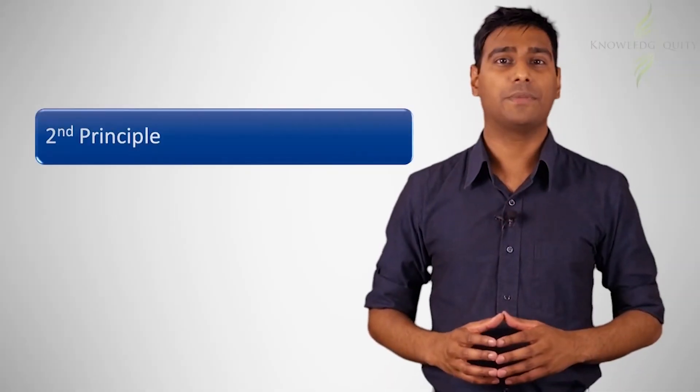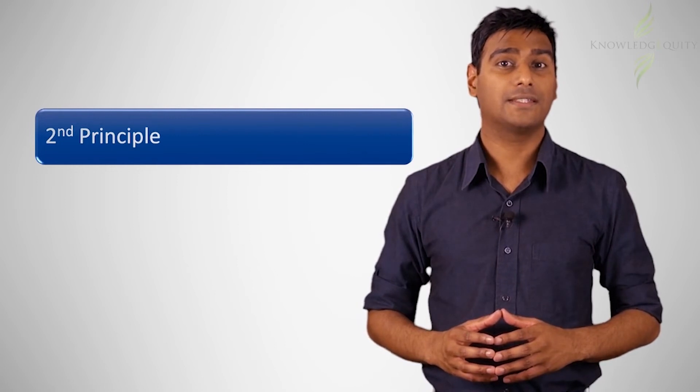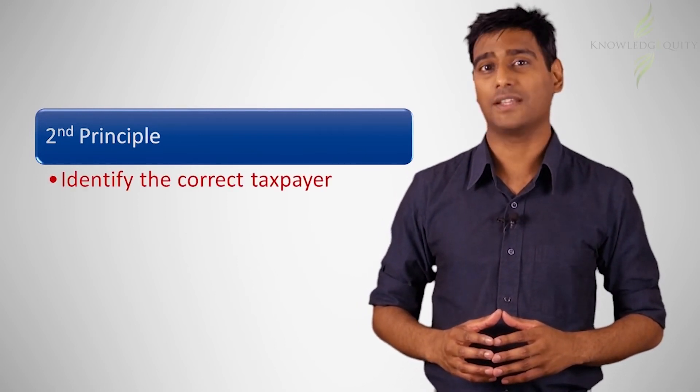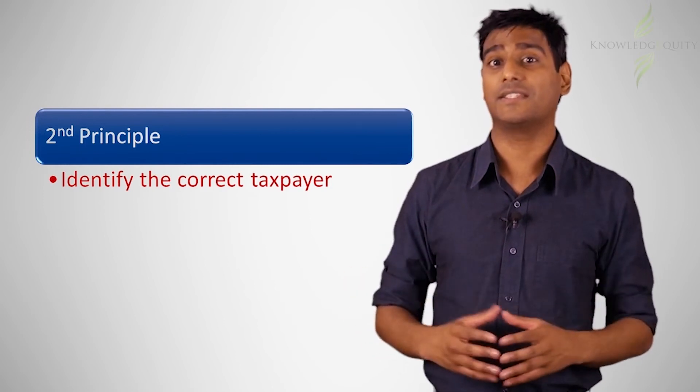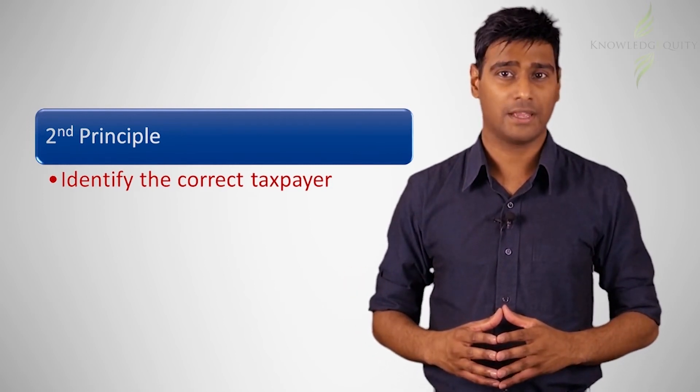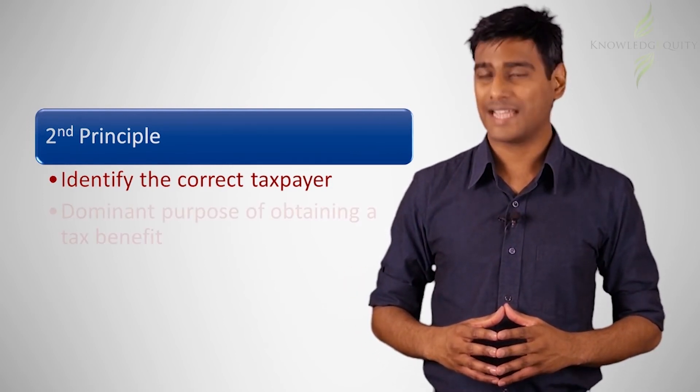The second principle from Peabody indicates that it is sometimes important for a tax office to identify the correct taxpayer in fulfilling the second requirement of Part 4a, that of there being a tax benefit.